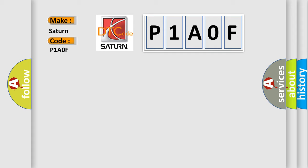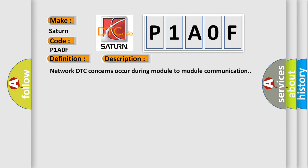The basic definition is Invalid data received from TCM. And now this is a short description of this DTC code. Network DTC concerns occur during module-to-module communication.